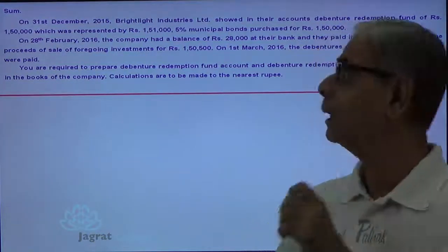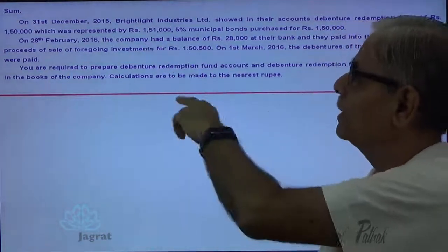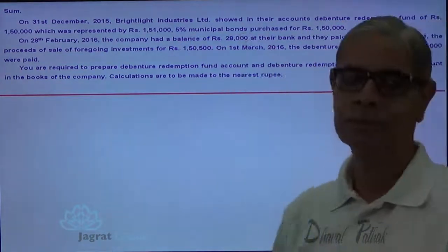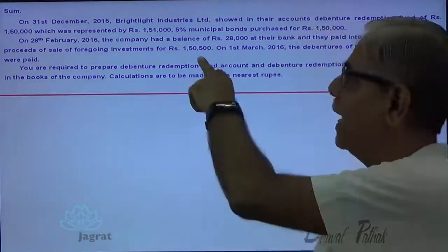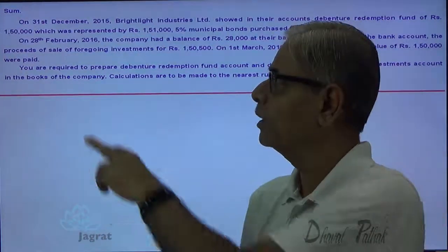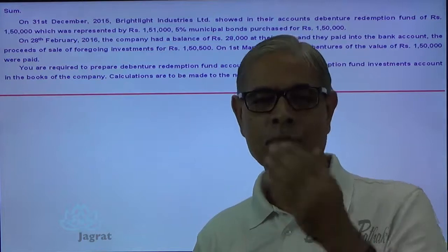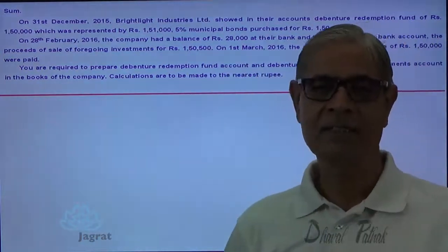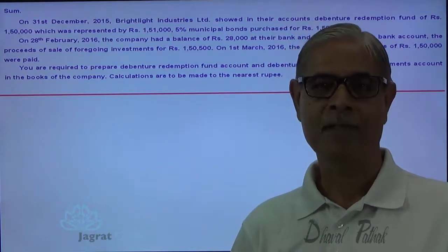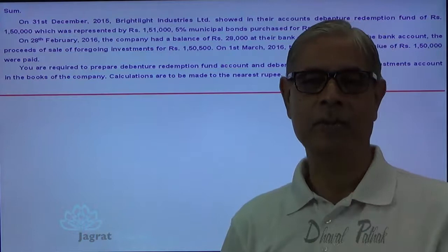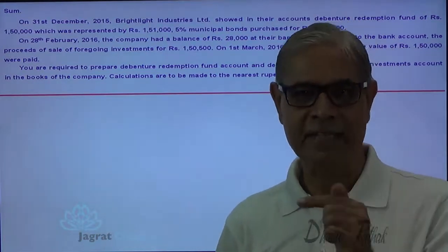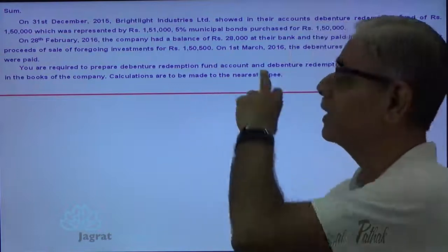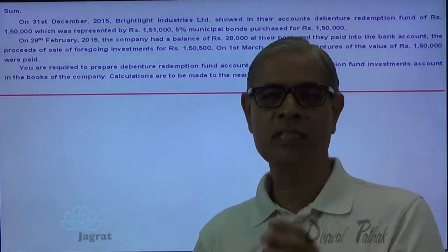There was a bank balance of ₹28,000 and the proceeds of this investment are ₹150,500 — a very important point. The investments were sold on 28th of February, which is two months after 31st December. This sales proceeds is a cum-interest sales proceeds. When you sell the investment, you receive interest till the date of sale, starting from the last date of interest. So this ₹150,500 includes interest.